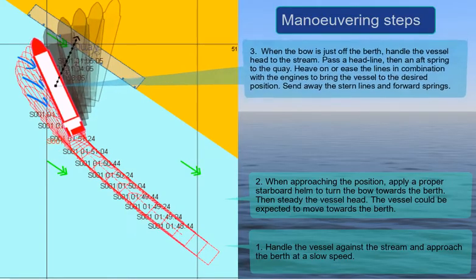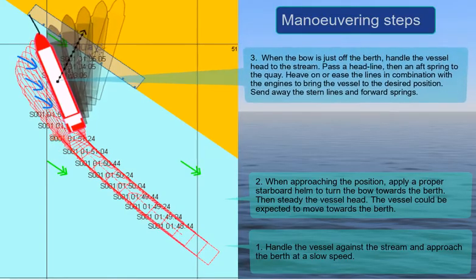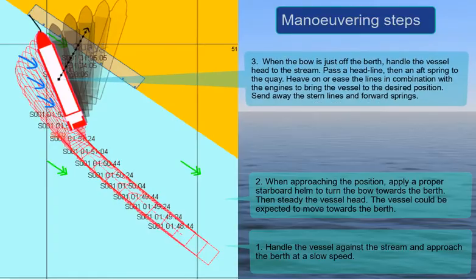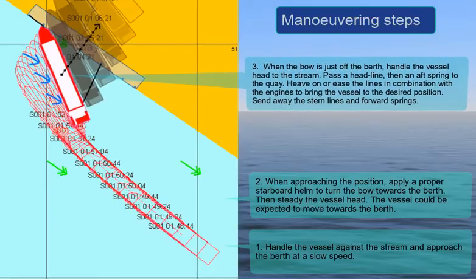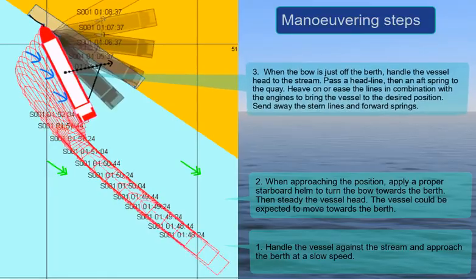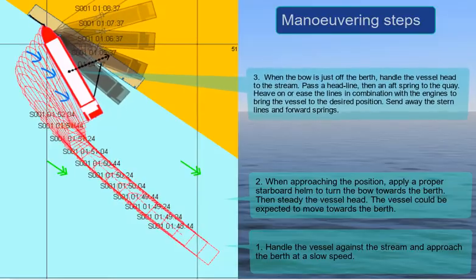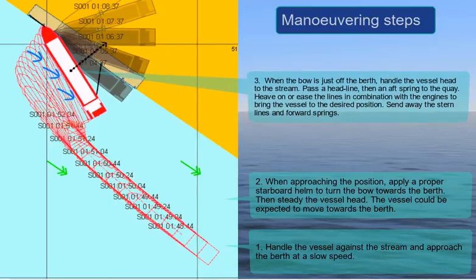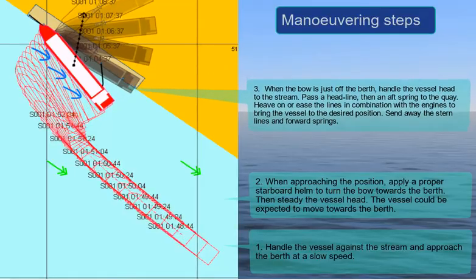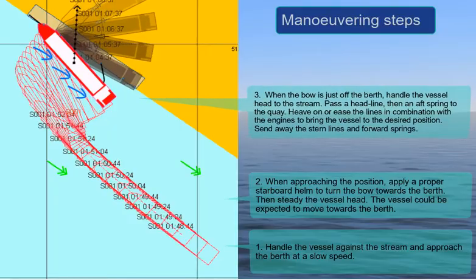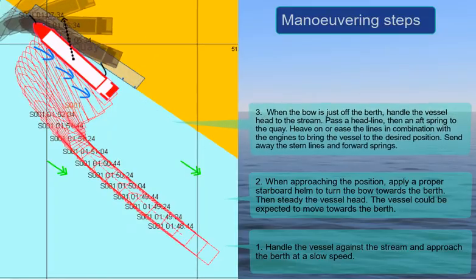Step 3: When the bow is just off the berth, handle the vessel head to the stream. Pass a head line, then an aft spring to the quay. Heave on or ease the lines in combination with the engines to bring the vessel to the desired position. Send away the stern lines and forward springs.